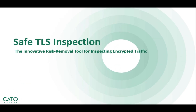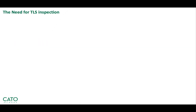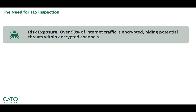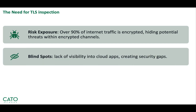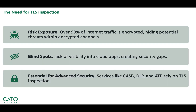In this video, we are going to show Cato Safe TLS Inspection, the innovative risk removal tool for inspecting encrypted traffic. With more than 85% of traffic being encrypted, TLS Inspection provides a critical function to reduce the risks associated with malware hidden in encrypted traffic, eliminates blind spots in cloud application usage, and unlocks important security functions like CASB, DLP, and advanced threat prevention.